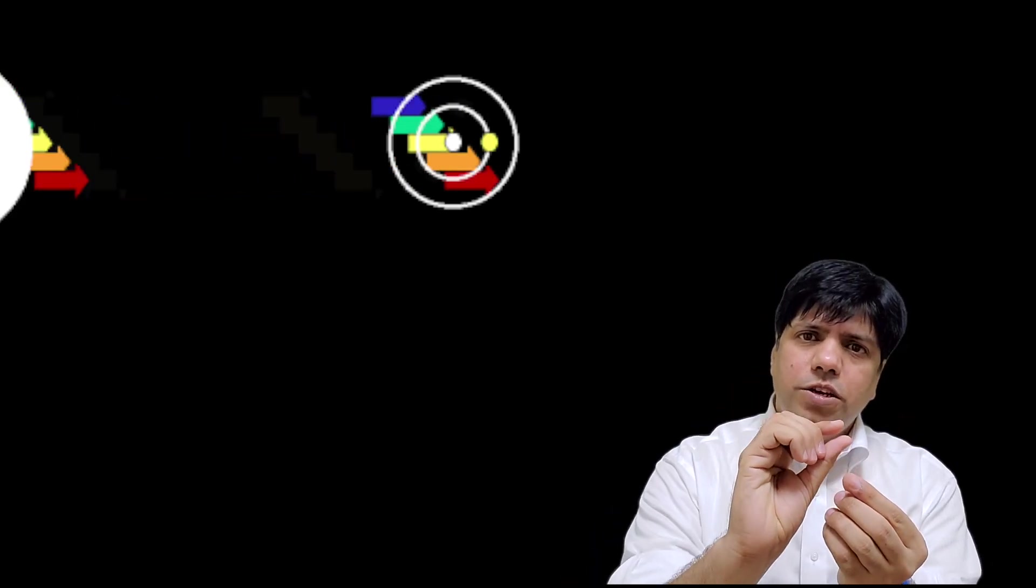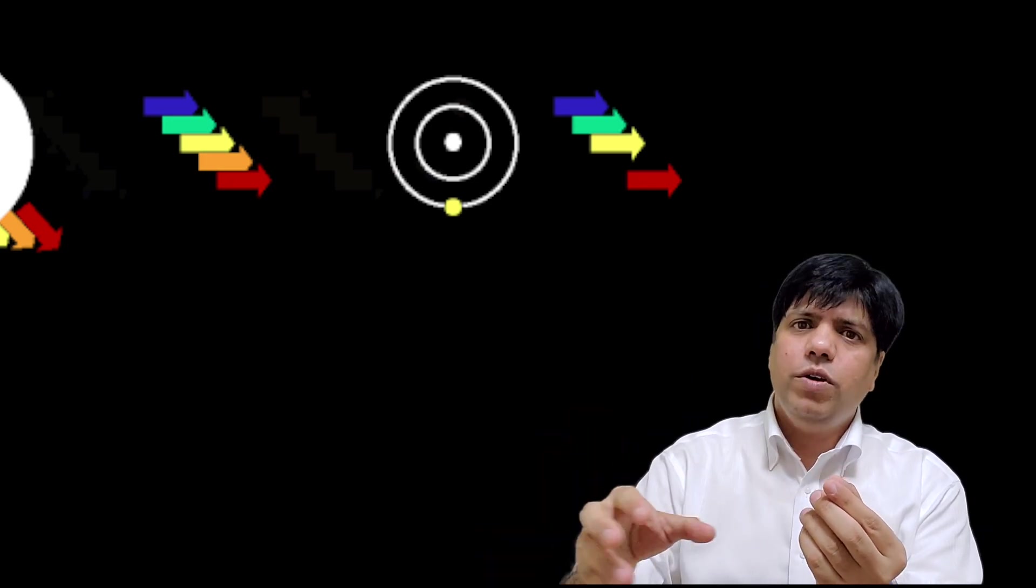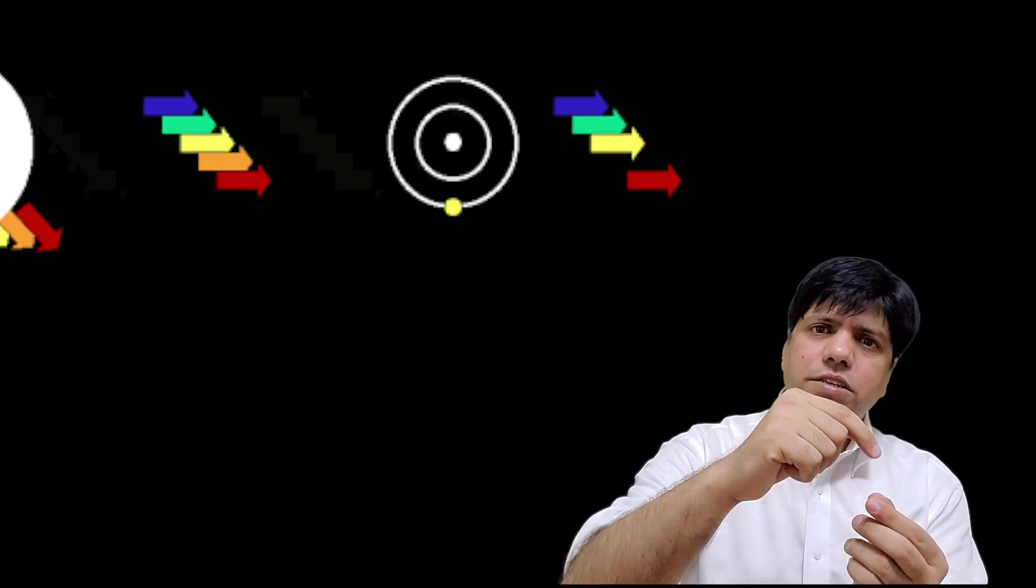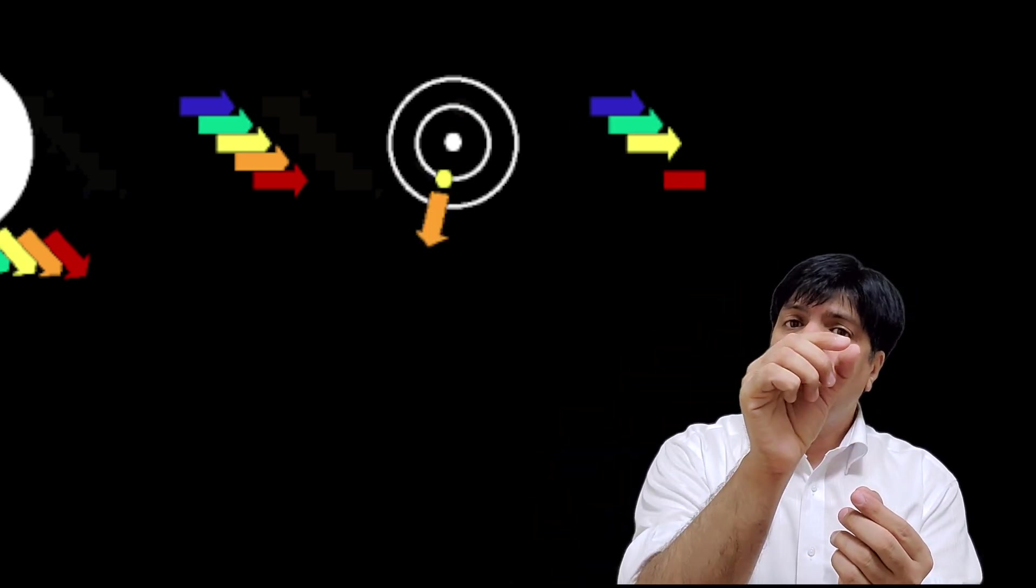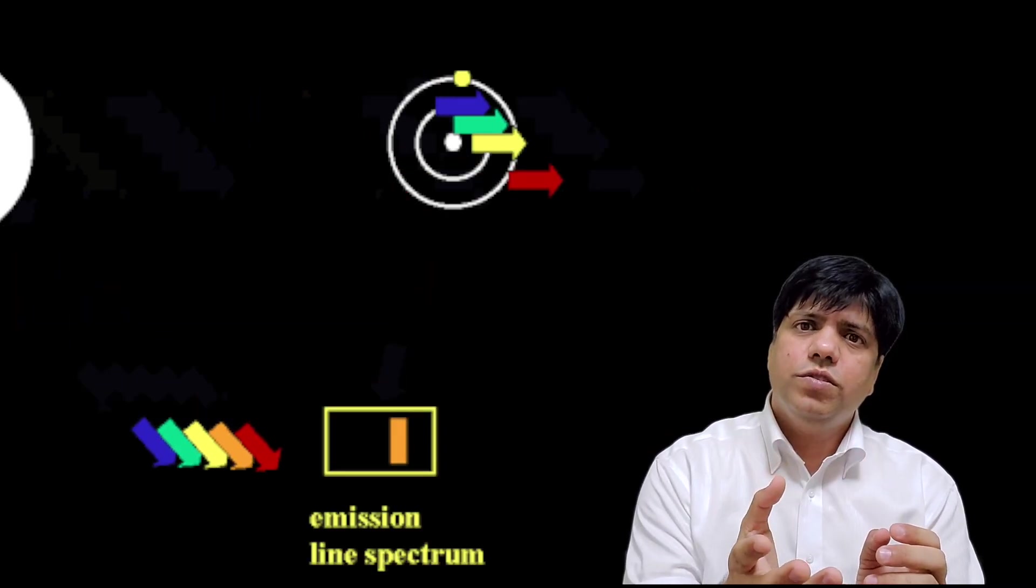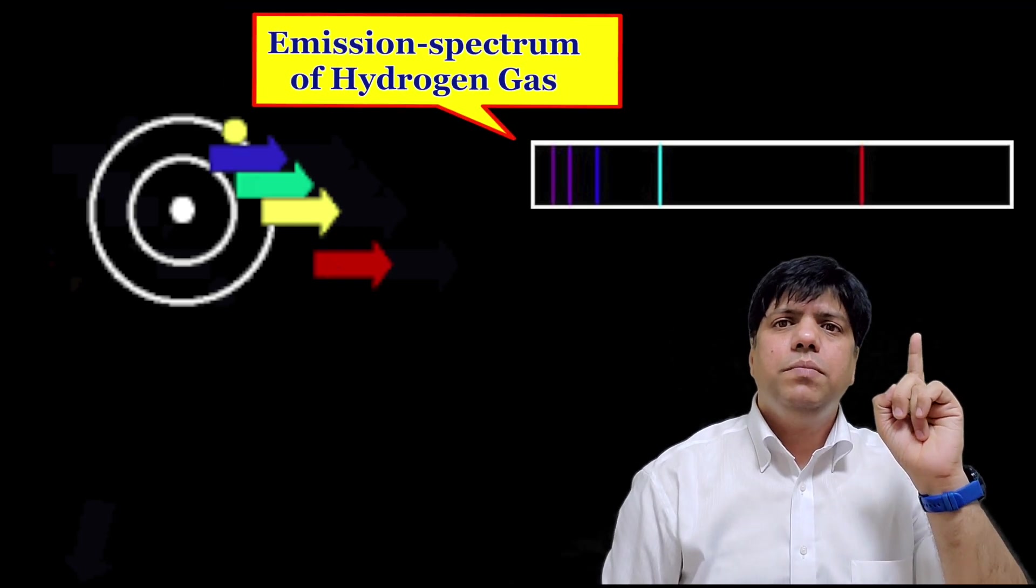What happens if you then take energy away? Well then in that case what happens is the electrons then come back to their original position in the atom and when they come back actually it emits light in the form of photons.